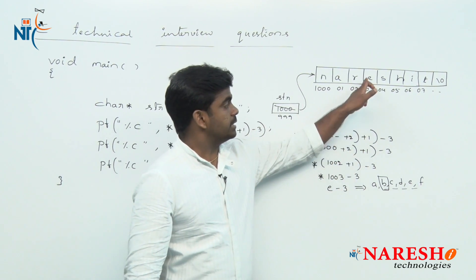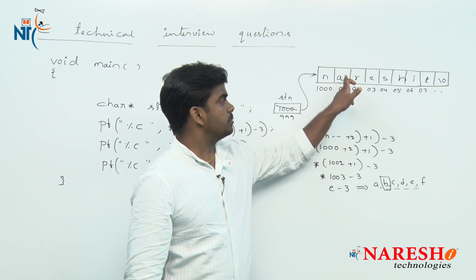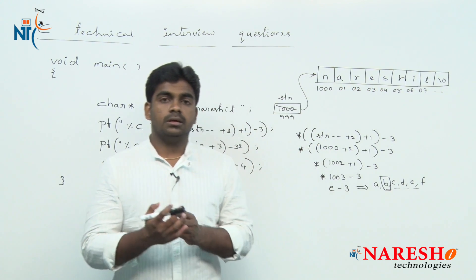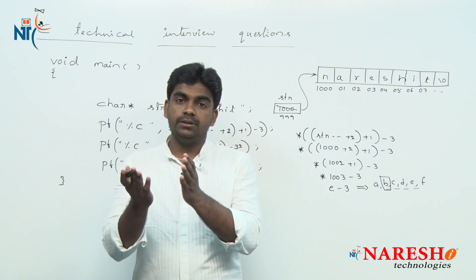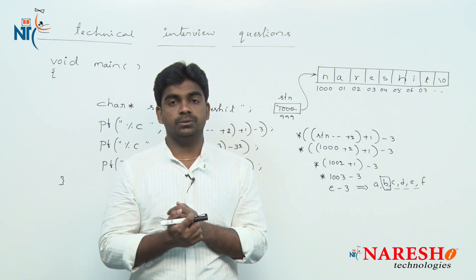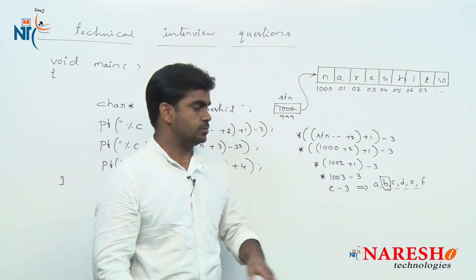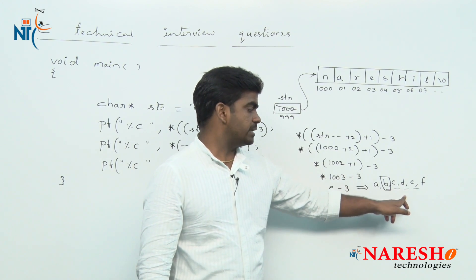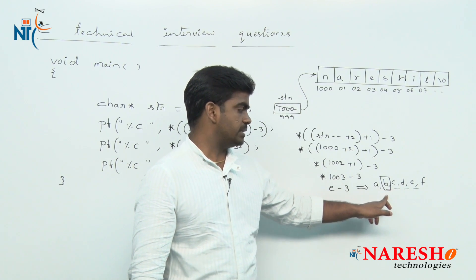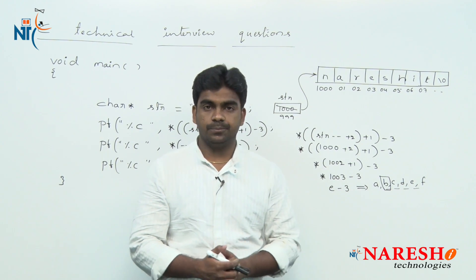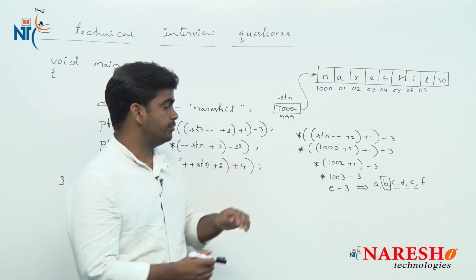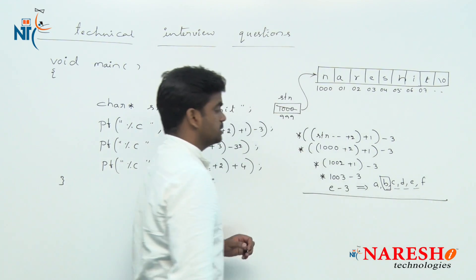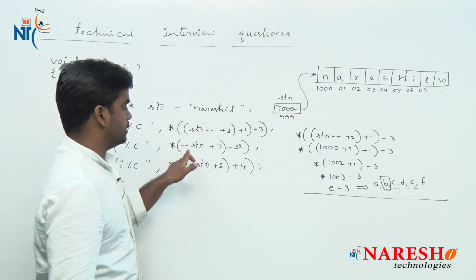Please do not think that e minus 3 means something else — it decreases the ASCII values. So e minus 1 minus 2 minus 3 gives the result 'b'. The first expression result is small 'b'.